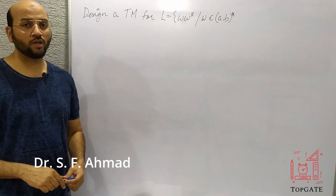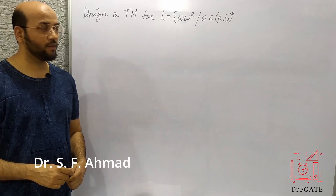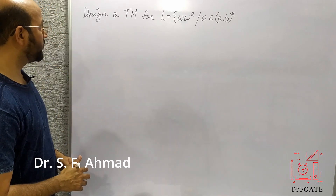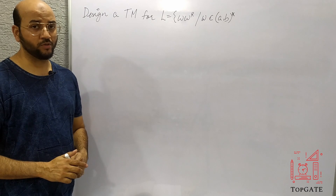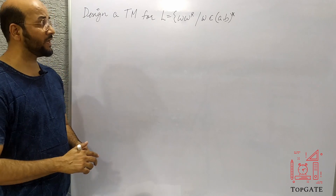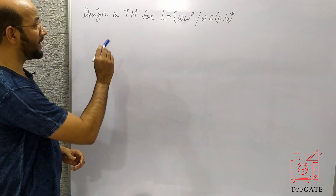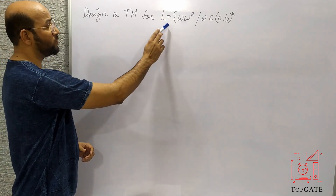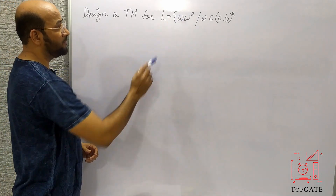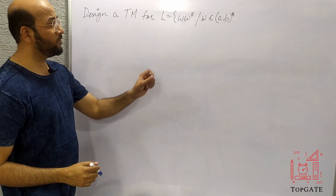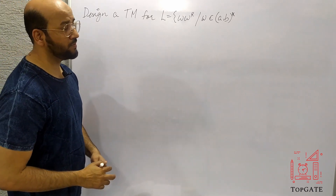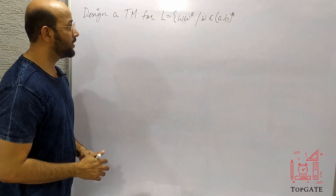Hello students, welcome to the channel TopGate. In this video we will discuss one more problem of Turing machine, that is to design a Turing machine for the language L equal to WW^R, where W belongs to {A, B}*.